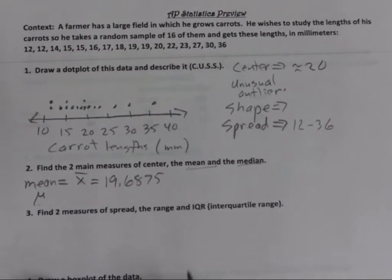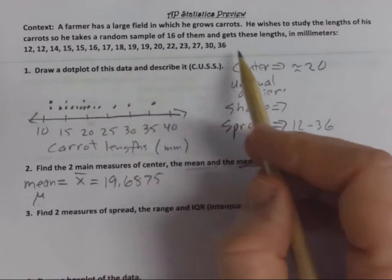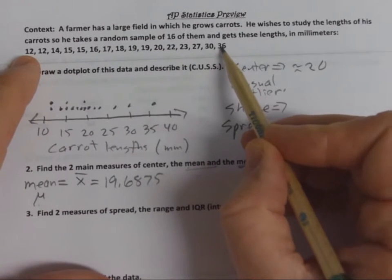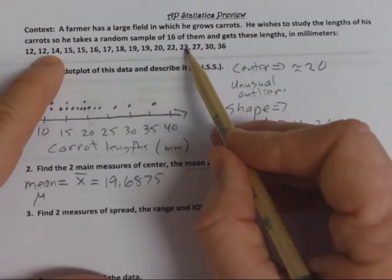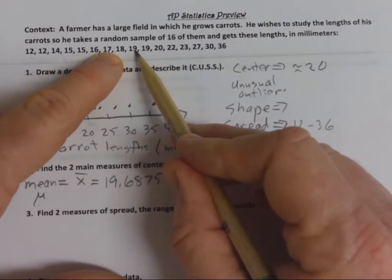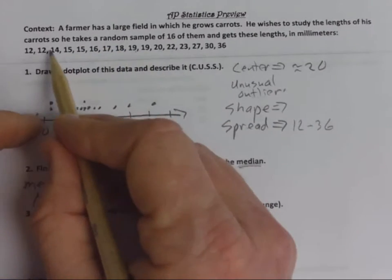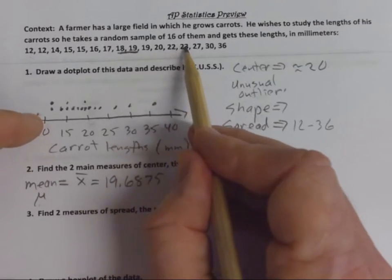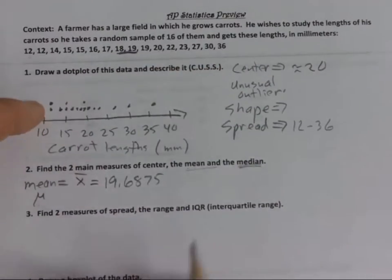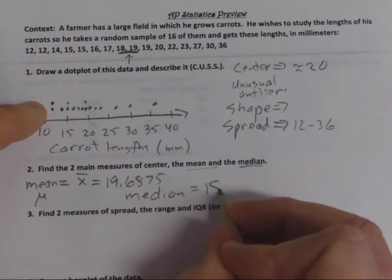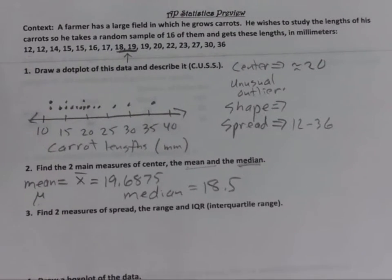The median is the number in the middle. We've got 16 numbers, so we count from the outside and find the number in the middle. If there are two numbers in the middle, you average them. Counting from the outside, we find two numbers in the middle. Our median is the average of those two numbers, which is 18.5. Those are the measures of central tendency.